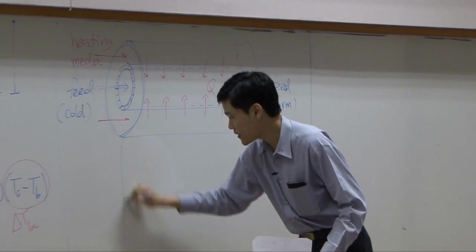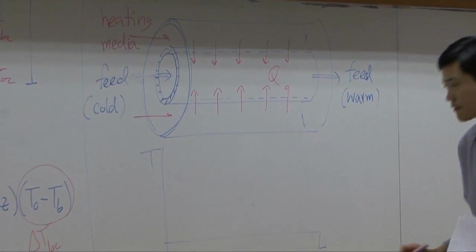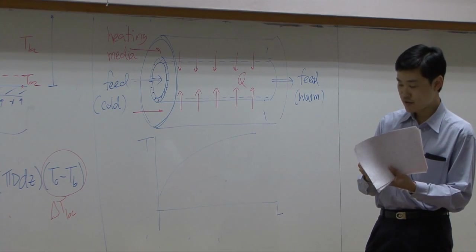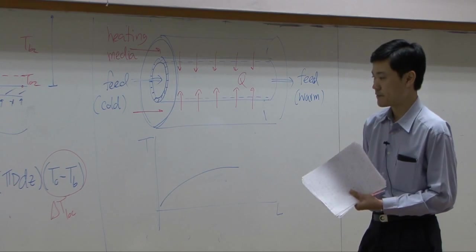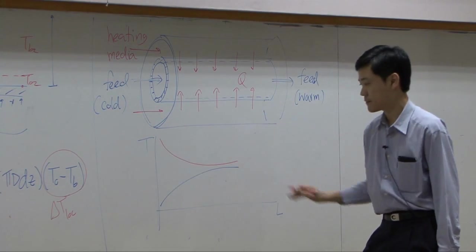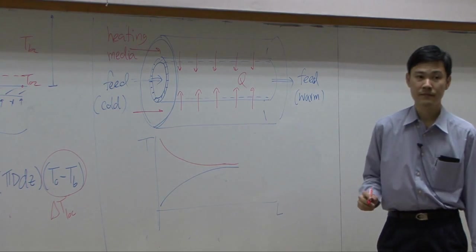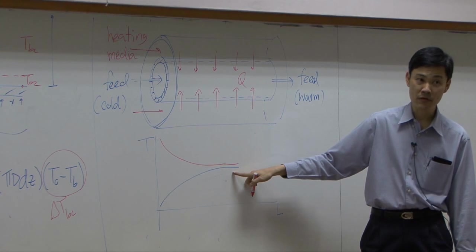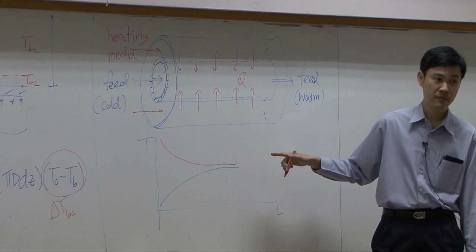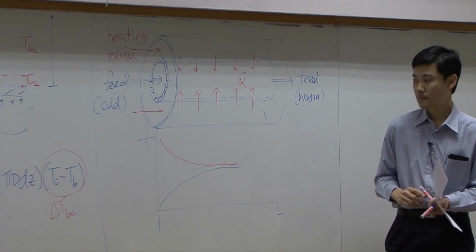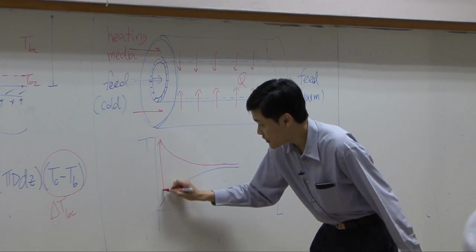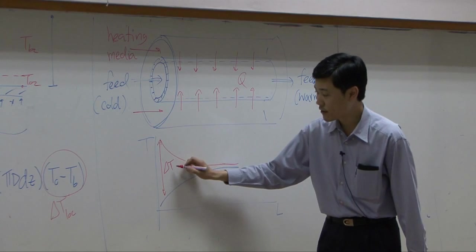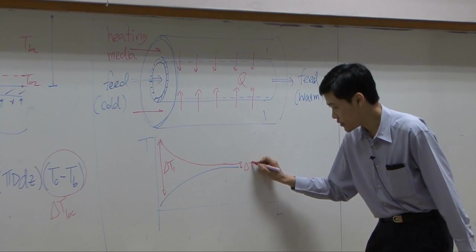So if you plot between temperature with respect to length of the pipe, temperature of the feed media is supposed to increase, temperature of the heating media is supposed to be decreased. Can this temperature, the red one, go slower than the blue one? No. No, it cannot. Once they are equal, heat transfer stops. So, the difference in temperature at this point would be driving force for heat transfer at inlet. So, you may call this one delta T1. Here, you have delta T2, driving force at outlet.